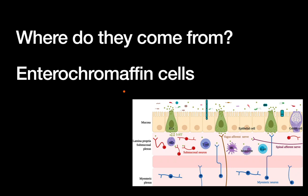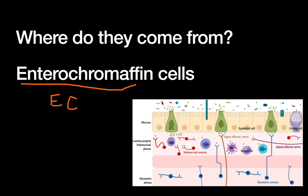When we talk about gastric NETs, where do these tumors come from? They come from a rarely discussed cell called the enterochromaffin cell, or the EC cell. These are neuroendocrine cells that basically act as a bridge between the lumen of the gut, shown here, and the extensive enteric nervous system.